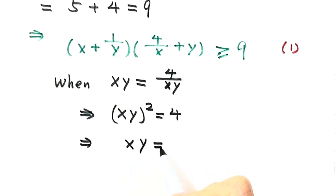So then we have xy equals 2. The reason we only keep a positive value is because both x, y are bigger than zero, so then xy is positive.